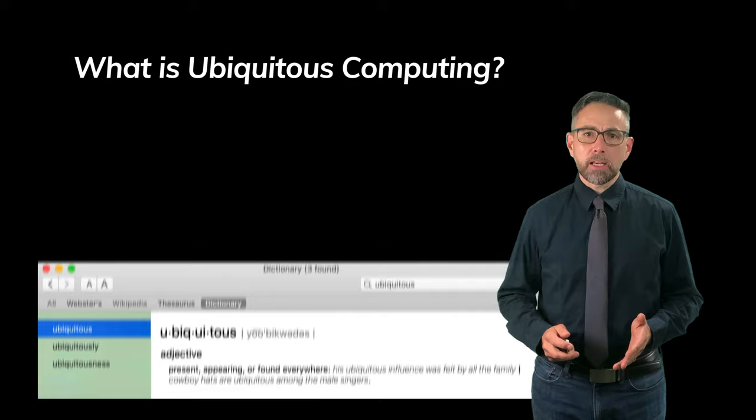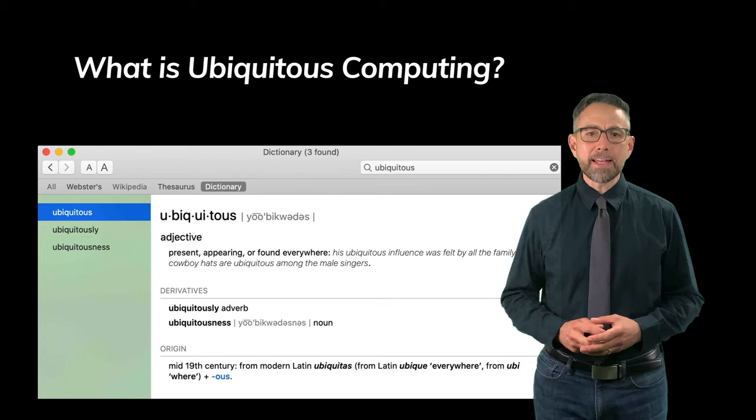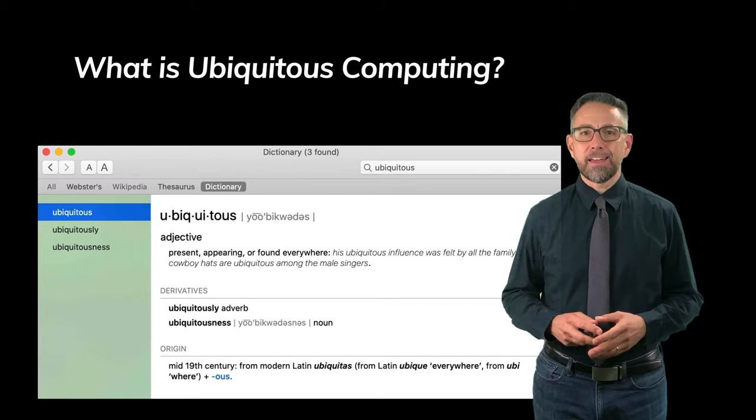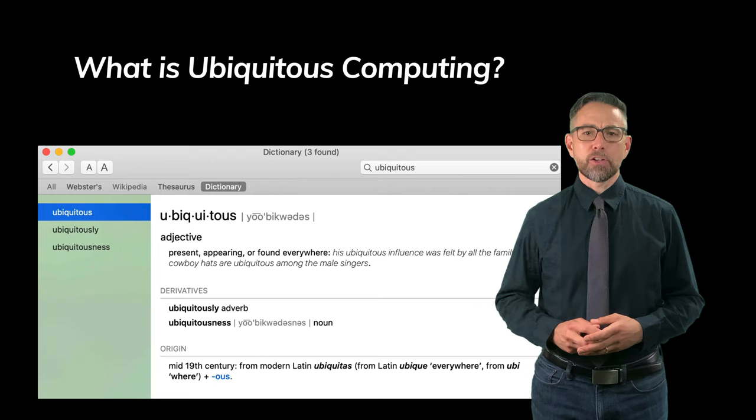We can start by looking at what the definition of ubiquitous is. From this dictionary entry we can see that ubiquitous means present, appearing, or found everywhere. You might use it in a sentence like the air is ubiquitous, it's all around me, or like the one here in the dictionary, cowboy hats are ubiquitous among the male singers.